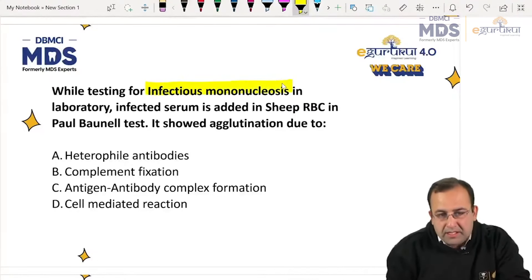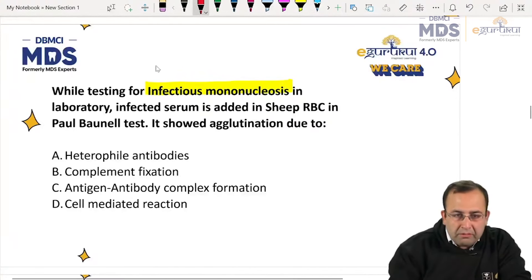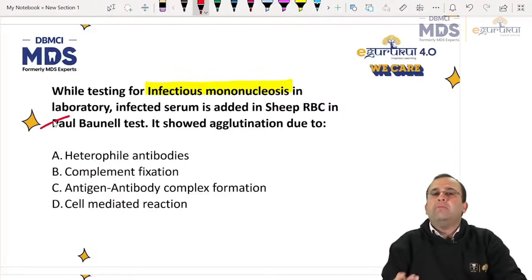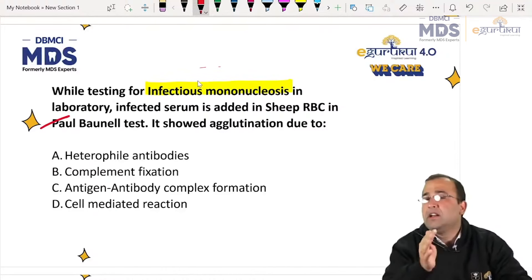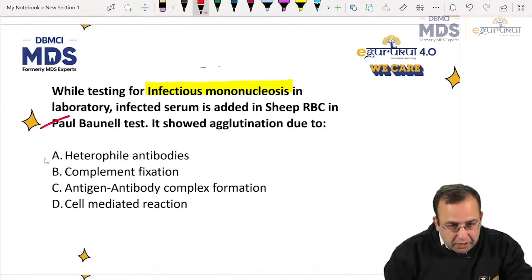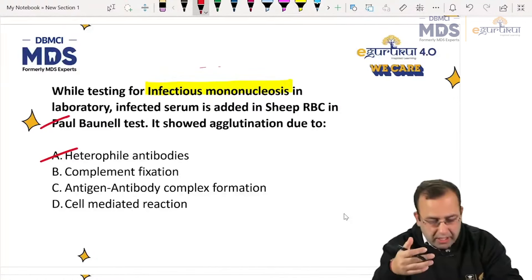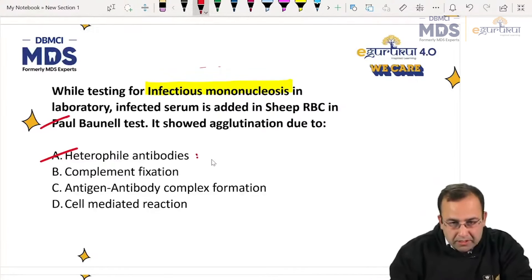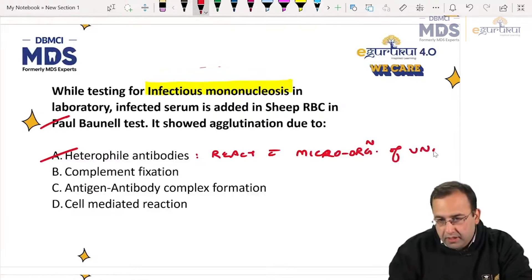Next question: while testing for infectious mononucleosis in the lab, injected serum is added in sheep RBCs. The name of the test is the Paul Bunnell test. Paul Bunnell test is used for infectious mononucleosis and it is a heterophile antibody test. Heterophile antibodies react with microorganisms of unrelated species due to common antigen sharing.